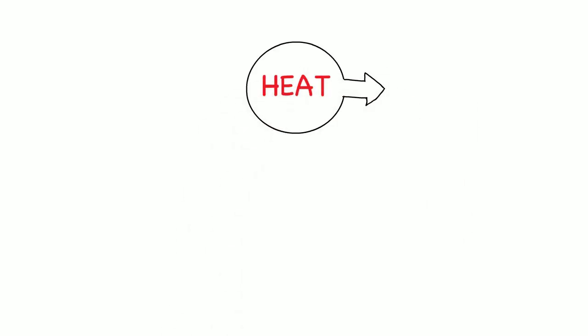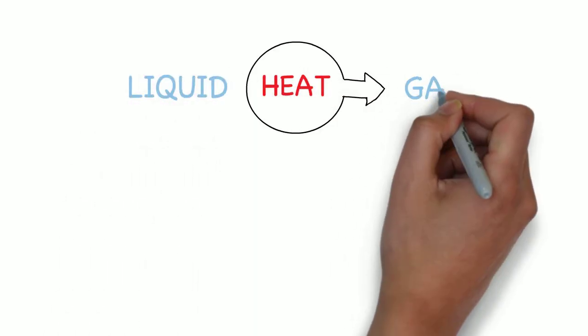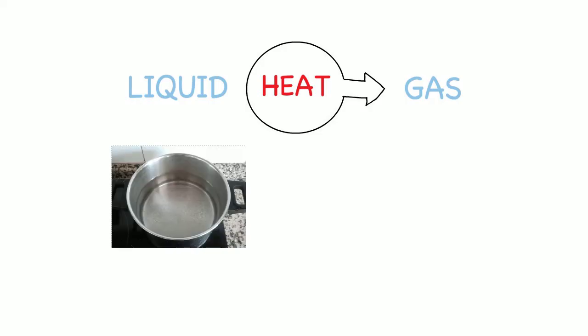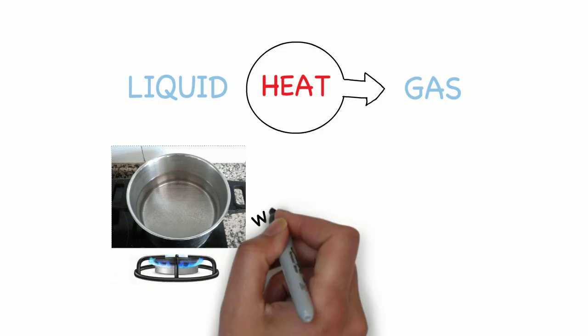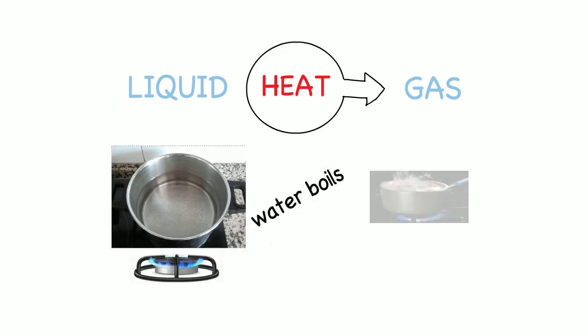Heat can also turn a liquid into a gas. Let's see a common example. The water in this pot is liquid. If we heat it on the stove, the water boils and the liquid becomes gas.